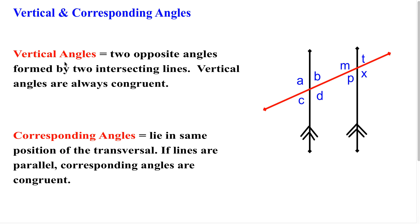So vertical angles, as it says over here, they're two opposite angles whenever we have two lines that intersect. And as it also says here, vertical angles are always congruent.